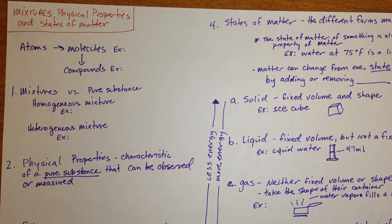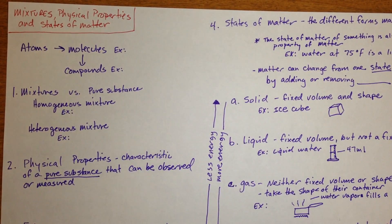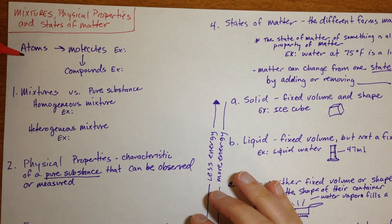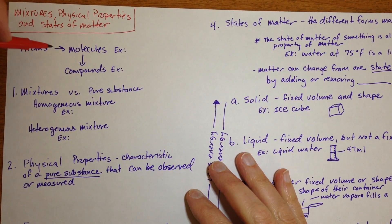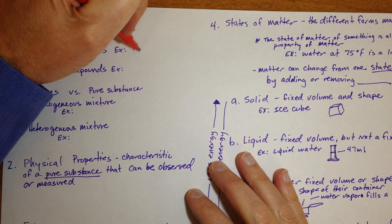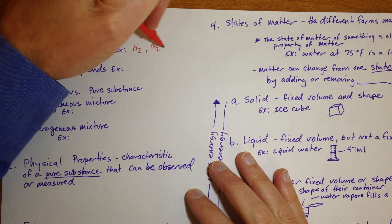Okay, this video is going to review mixtures and physical properties and states of matter. So starting with the review before that, atoms, when they combine together through chemical bonds, can form molecules.